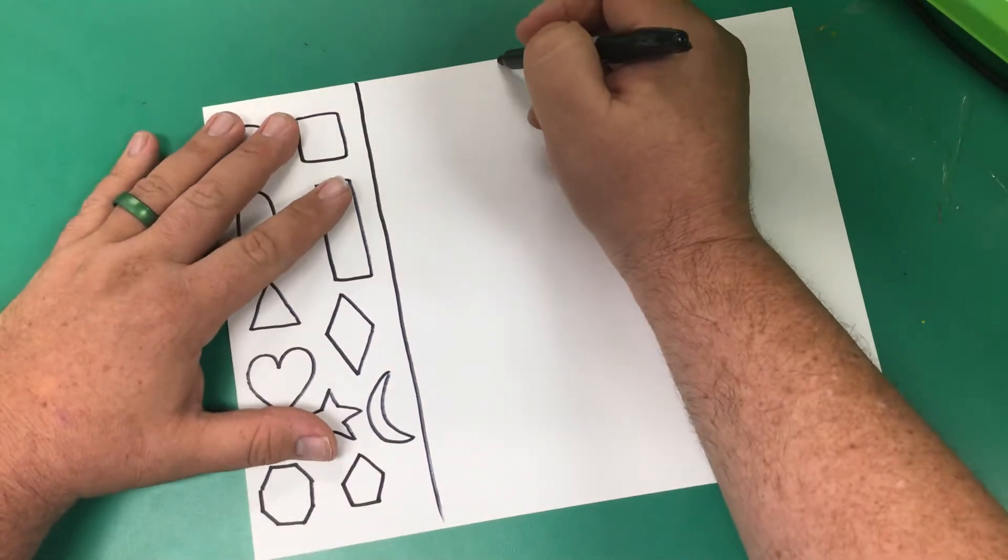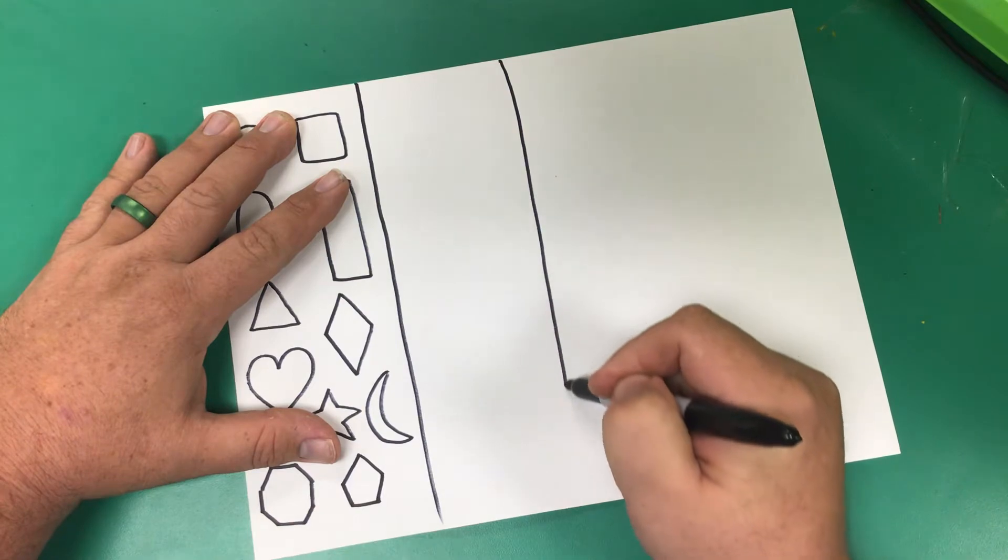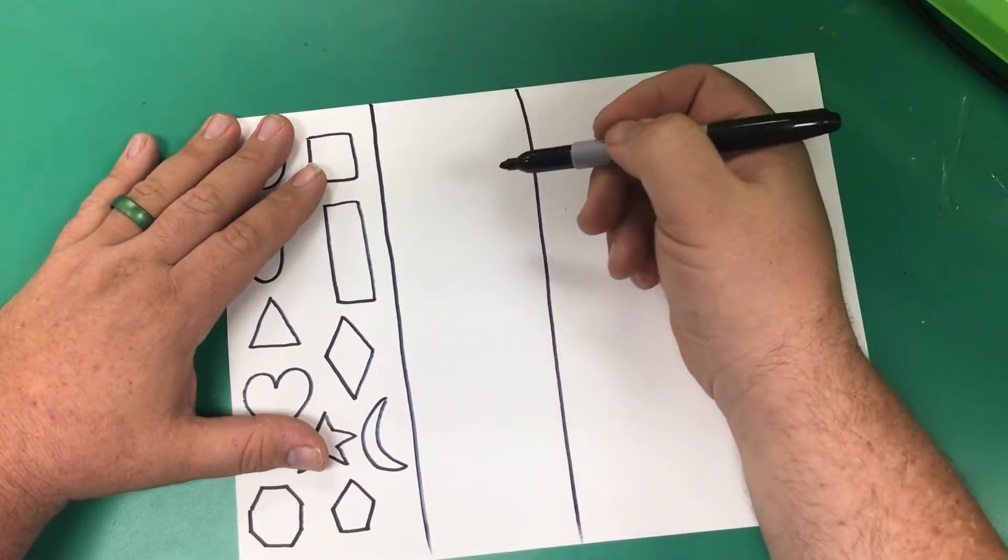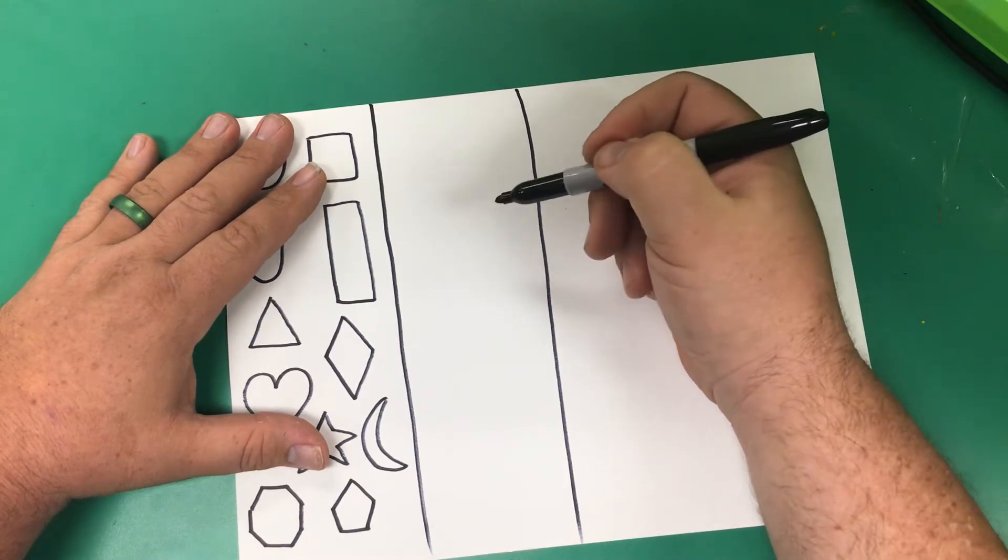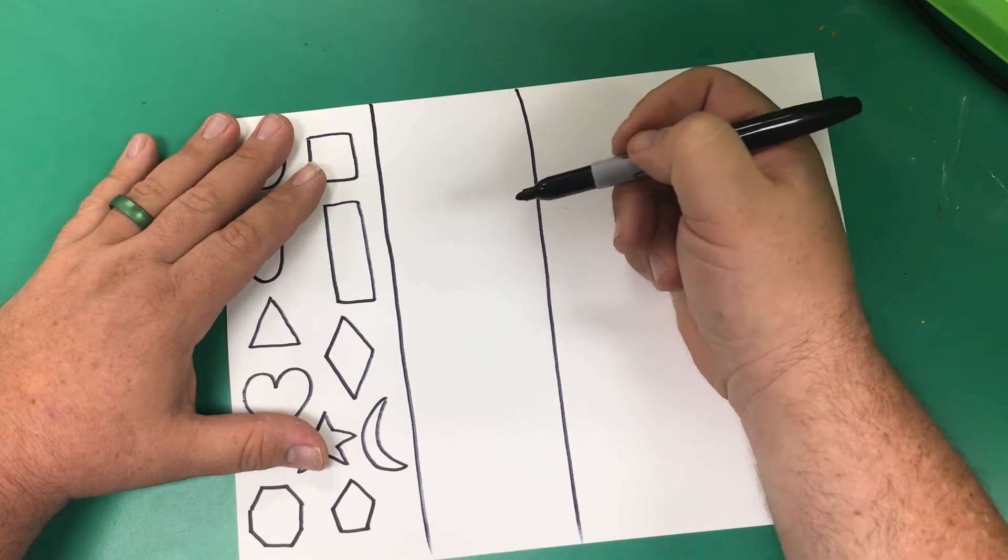Now the next group are organic shapes. Organic shapes. These are the shapes that you can't really name. And usually when you go to describe them, you say it looks like a.